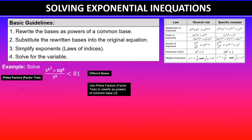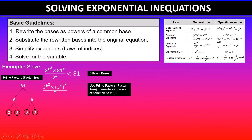Using factor 3 we will split 81. So 81 can be written as 9 times 9, and then 9 is 3 times 3, and the other 9 is also 3 times 3. You can clearly see that 81 can be rewritten as 3 to the power of 4, because it's 3 times 3 times 3 times 3. So we now have 3 to the power of k squared, times 3 to the power of 4 raised to the power of k, divided by 3 to the power of k, is less than 3 to the power of 4.